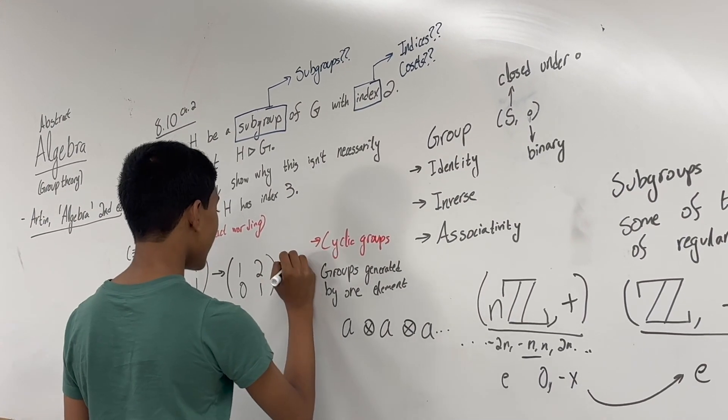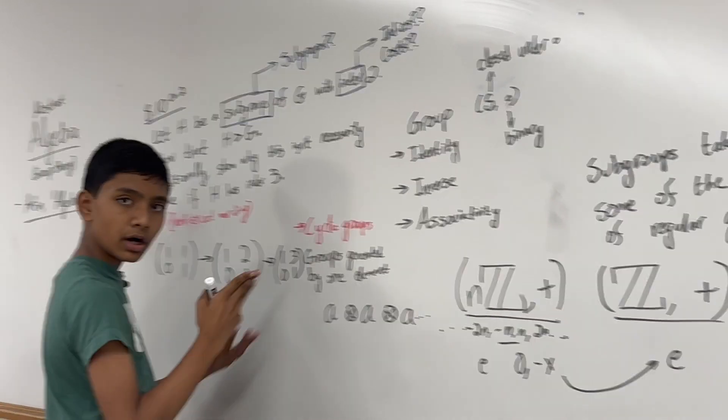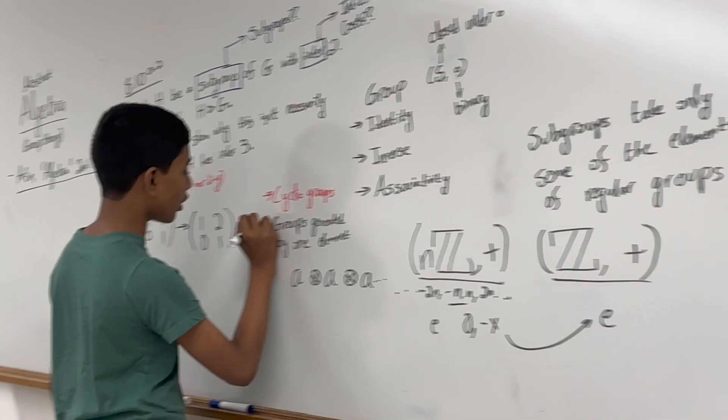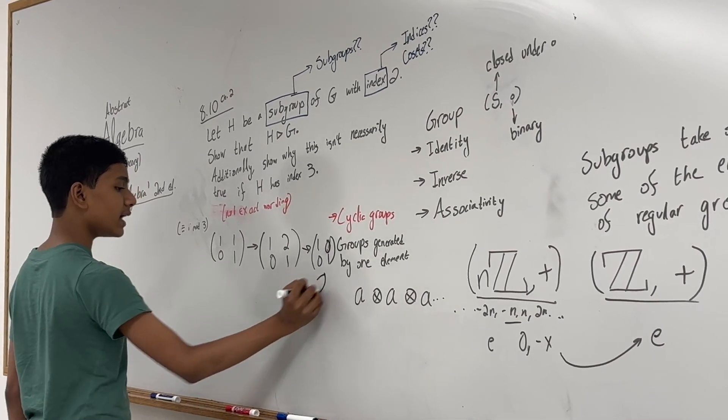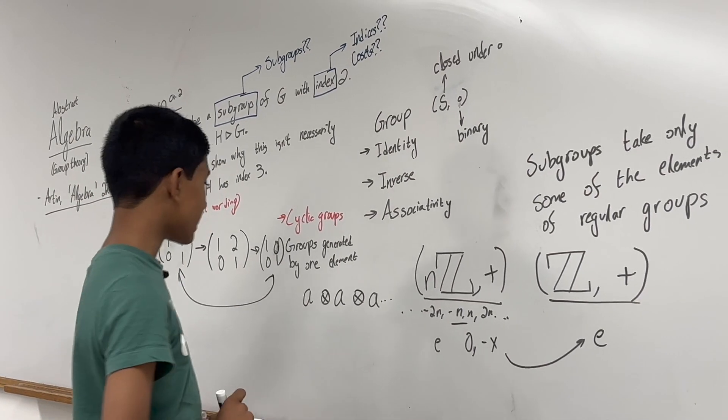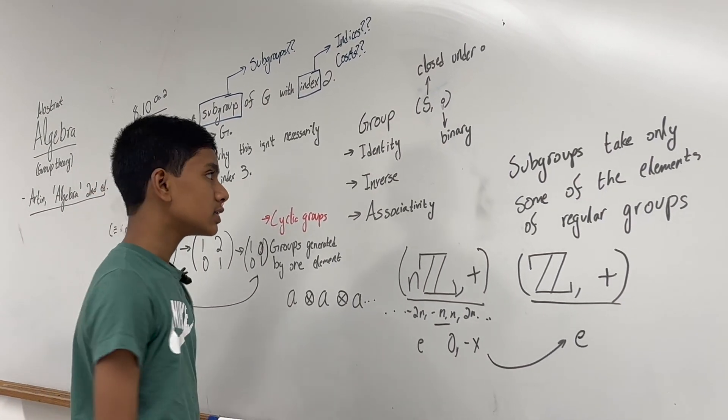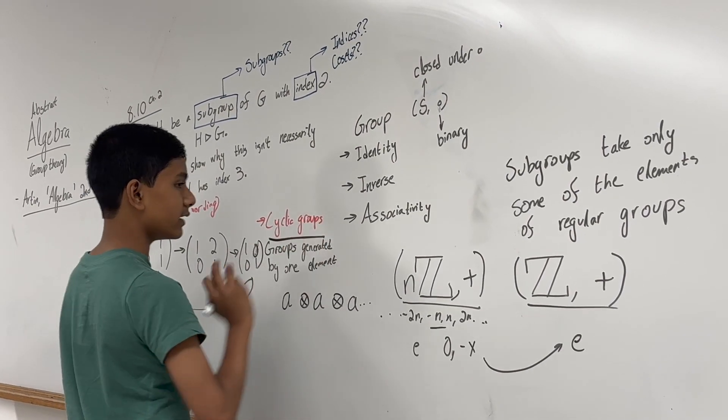If you do this again, it gives you [[1,3],[0,1]]. But mod 3, this is just [[1,0],[0,1]], which gives you the identity. Meaning that if you multiply by this again, it gives you back the first matrix. This is a cyclic group of order 3, and this is how we can generate a cyclic group.